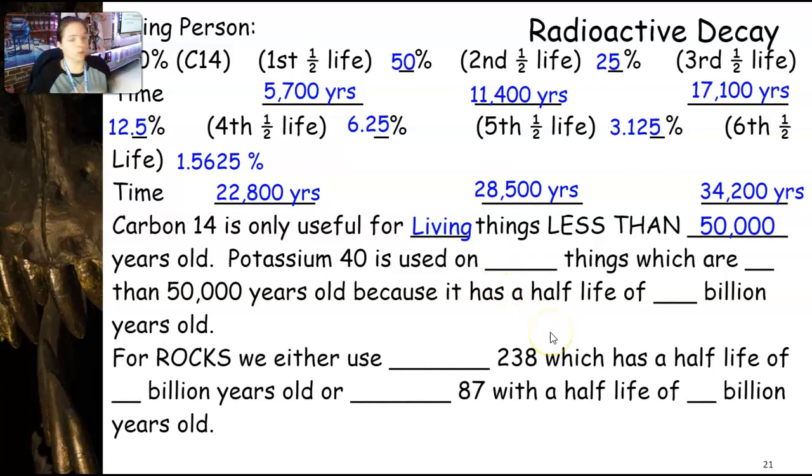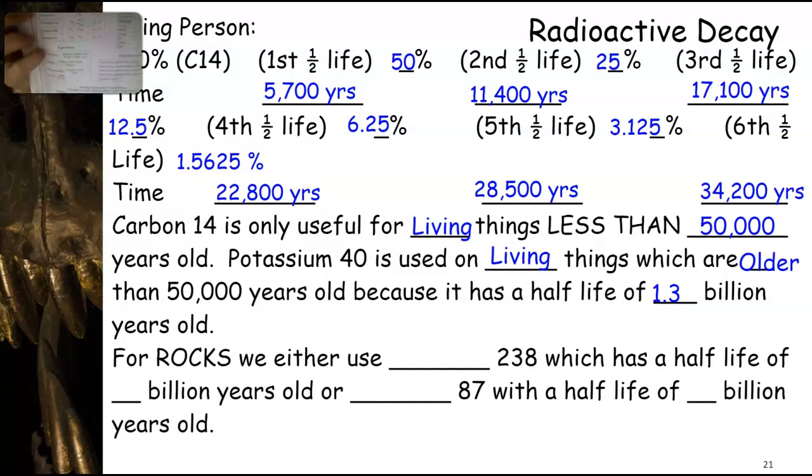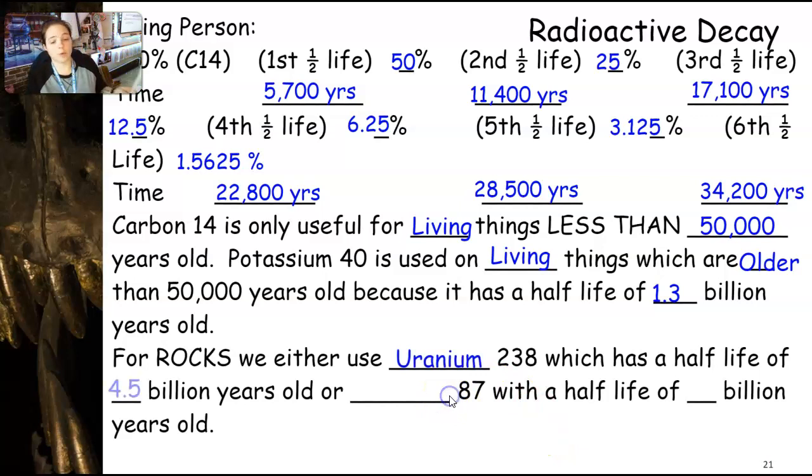The next one we're going to look at, we looked at carbon-14. Now, the next one is potassium-40. That is also used on living things which are older than 50,000 years old because its half-life is 1.3 billion. So, that's the half-life at 5,700. You can only cut stuff down so much. And 1.3 billion years, you have lots that you can cut to be able to read. For rocks, we use either uranium-238 with a half-life of 4.5 billion, or we use rubidium-87 with a half-life of 49 billion years.